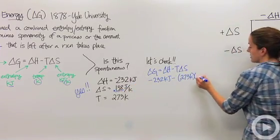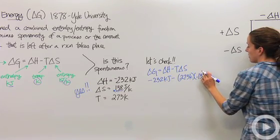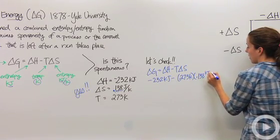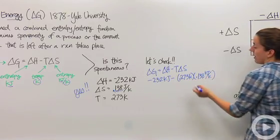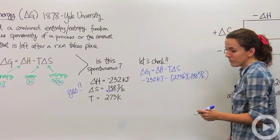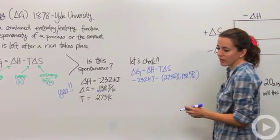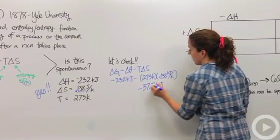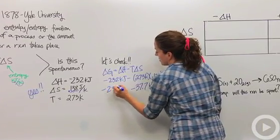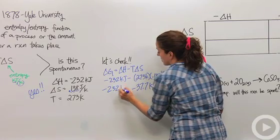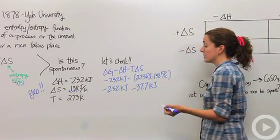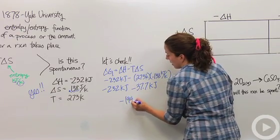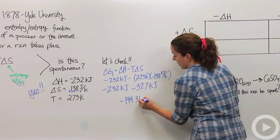So delta S becomes 0.138 kilojoules per Kelvin. When I multiply 273 by 0.138, I get 37.7 kilojoules. Then negative 232 kilojoules minus 37.7 kilojoules gives me negative 194.3 kilojoules.